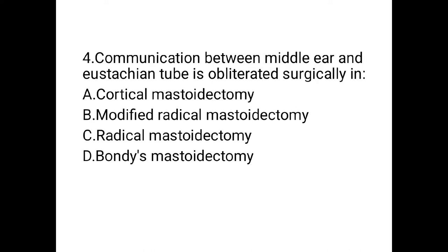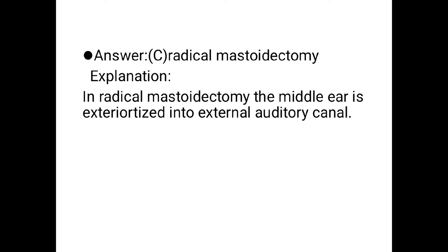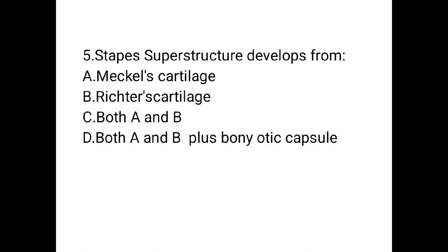Next question: communication between middle ear and Eustachian tube is obliterated surgically in — Option A: cortical mastoidectomy. Option B: modified radical mastoidectomy. Option C: radical mastoidectomy. Option D: bondage mastoidectomy. Option C, radical mastoidectomy, is the correct answer. Explanation: in radical mastoidectomy, the middle ear is exteriorized into the external auditory canal.